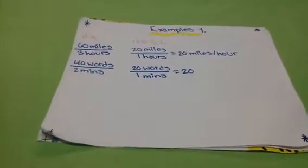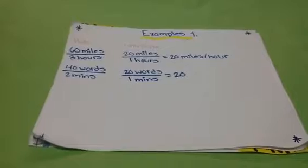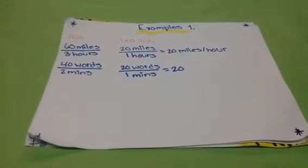The rate is 60 miles in 3 hours. The unit rate is 20 miles in 1 hour equals 20 miles per hour.